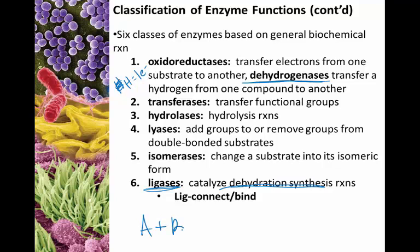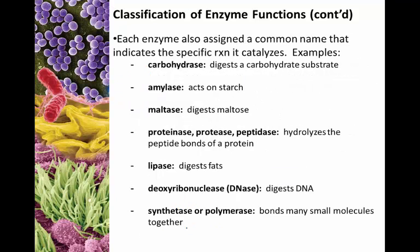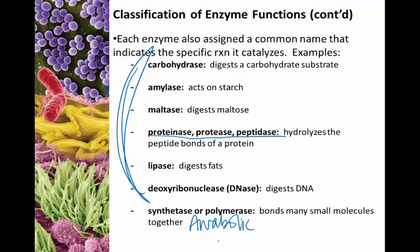More specific examples — most of these are breaking reactions: carbohydrases for carbohydrates, proteinases, proteases, and peptidases for proteins, lipases for fats, and DNase to digest DNA. For building or anabolic reactions, we have synthetases, synthases, or polymerases, all bonding molecules together. So we see catabolic and anabolic reactions fueled by enzymes.